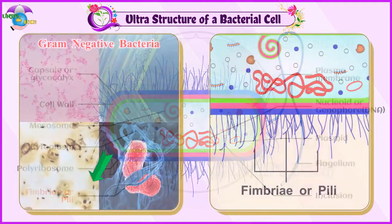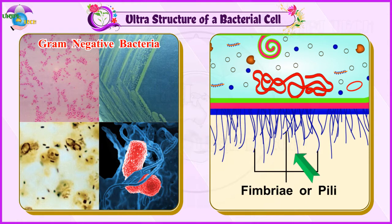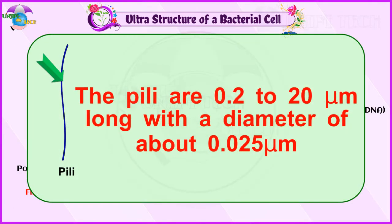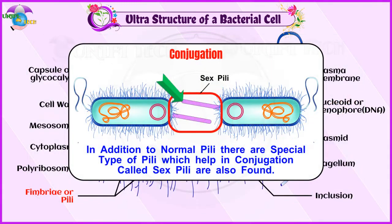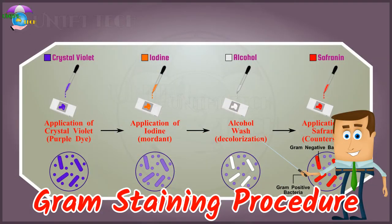Fimbriae: Fimbriae are hair-like appendages found on the surface of the cell wall of gram-negative bacteria. The next topic, Gram Staining Procedure, will be covered in the next video.